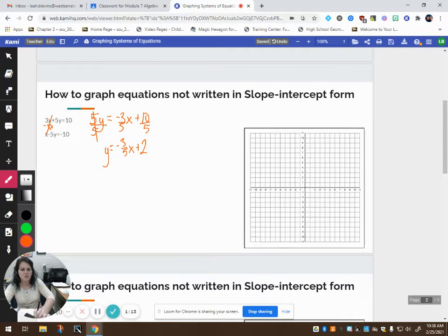I want to come over here to my graph, and I'm going to plot the points. I've got 2, that's my y-intercept, and then my slope tells me to go down 3, 1, 2, 3, and to the right 5, or I could go up 3, and to the left 5 since it is negative. So now let's connect our points with a line, and then we're going to solve the other equation.